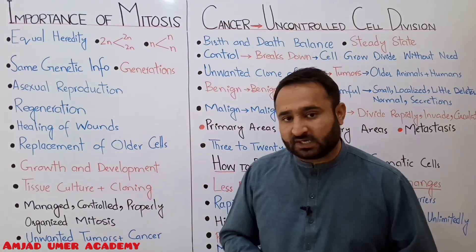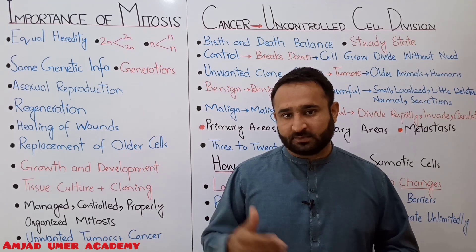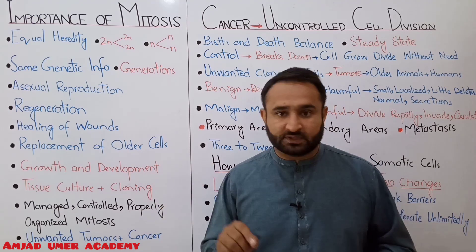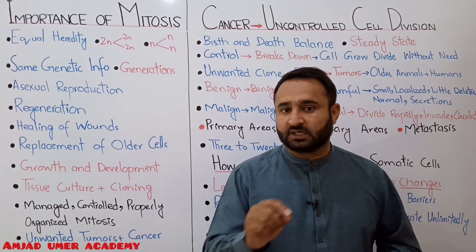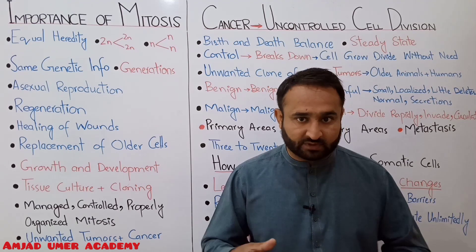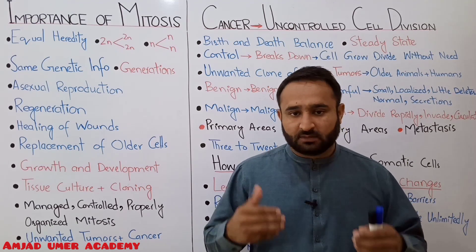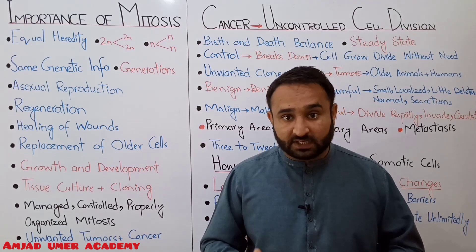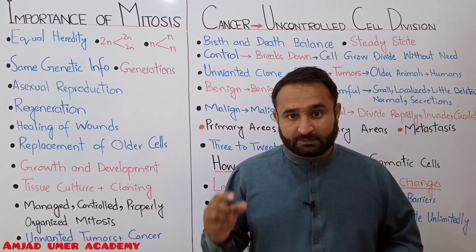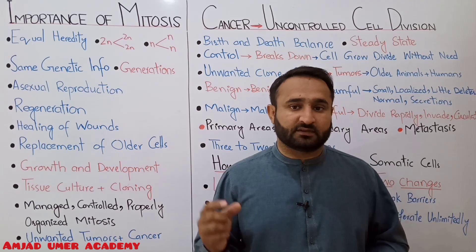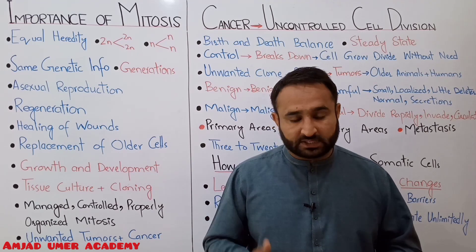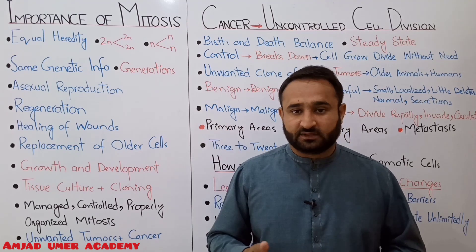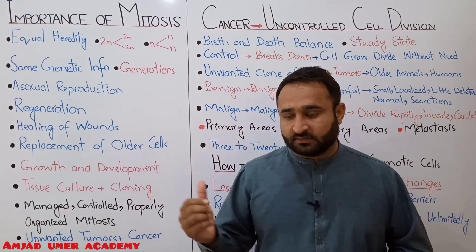Growth and development in multicellular individuals. Our growth and development occur just because of mitosis. In human life, spermatogenesis and oogenesis involve meiosis to reduce chromosome number, but the rest of our body — healing of wounds, regeneration, growth and development — all involves mitosis. Our life started with a zygote, a single cell. In that zygote, mitosis begins — what we call cleavage — producing many cells, then birth, and we develop and grow.